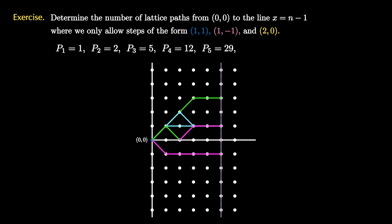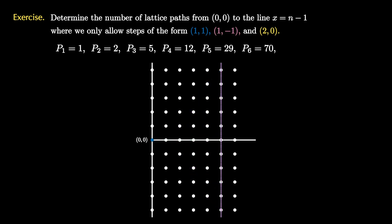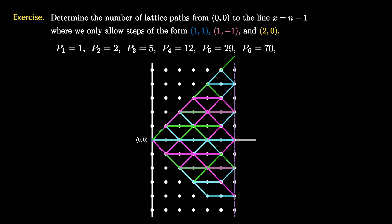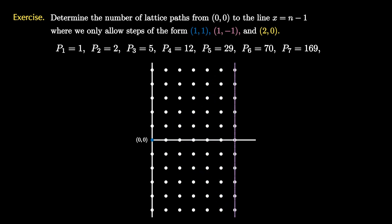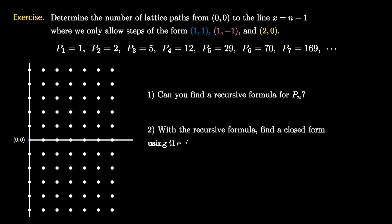Let's compute two more data points by listing all paths from (0,0) to the line x equals 5, giving p6 equals 70, and then moving the line to x equals 6, giving p7 equals 169, and this process continues. Can you see how to think about the paths recursively to find a recursive formula for p sub n? Once you have the recursive formula, can you find a closed form using the characteristic equation and characteristic roots technique?